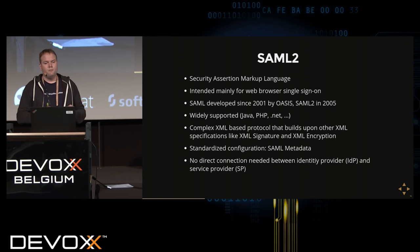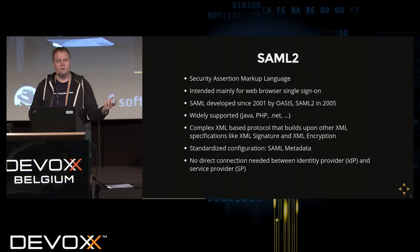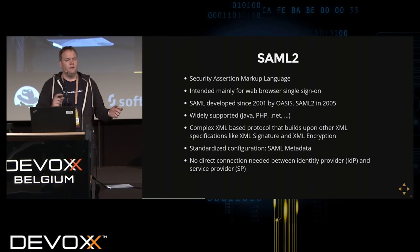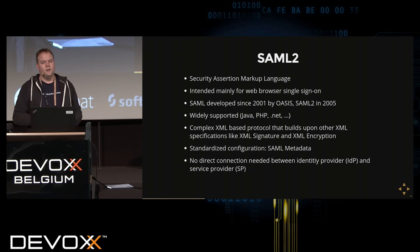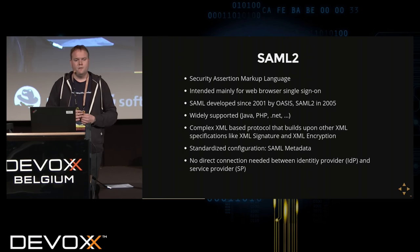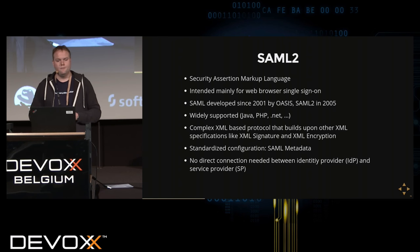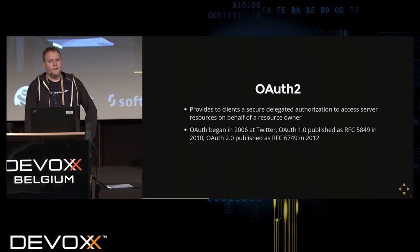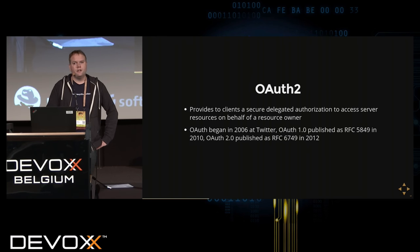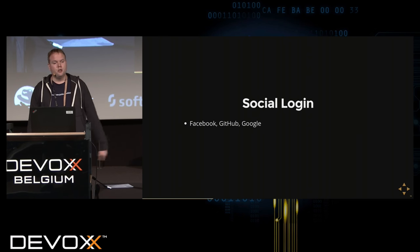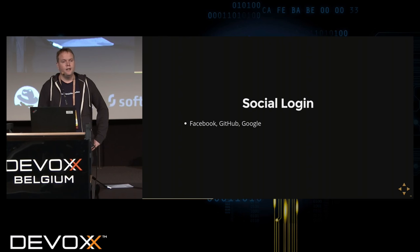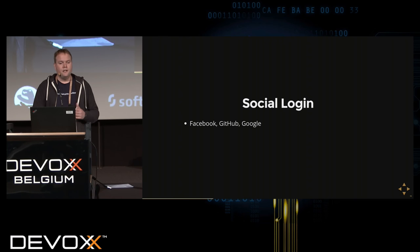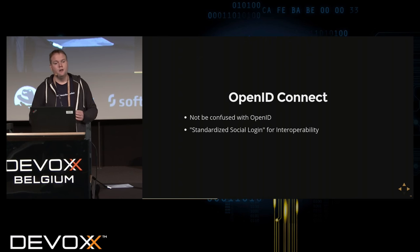Another SAML feature is that the identity provider and service provider don't need a direct connection — the user transports all data between both systems, which is very useful when security domains can't connect directly. OAuth 2 is more recent; it provides delegated authorization especially in the web and cloud context. Facebook, GitHub, and Google all used it for social login, even though it wasn't designed for login. OpenID Connect was then invented to standardize social login capabilities, building on OAuth 2.